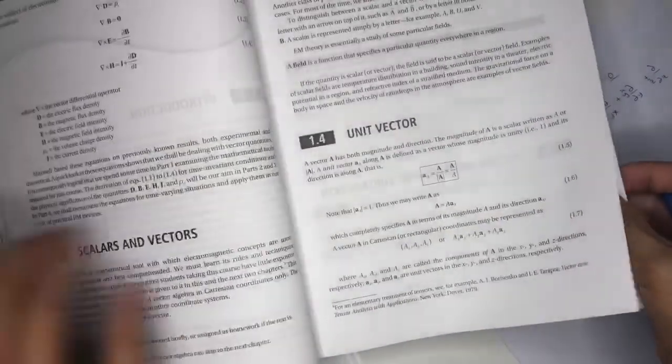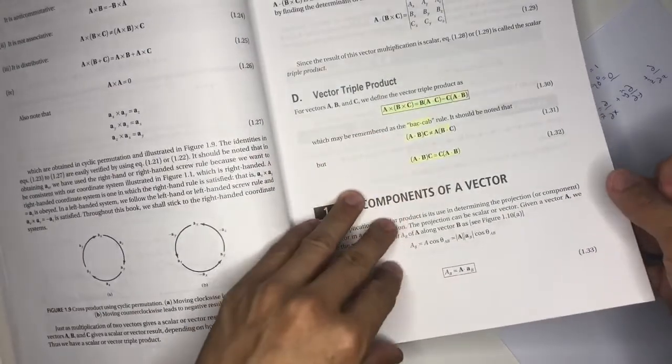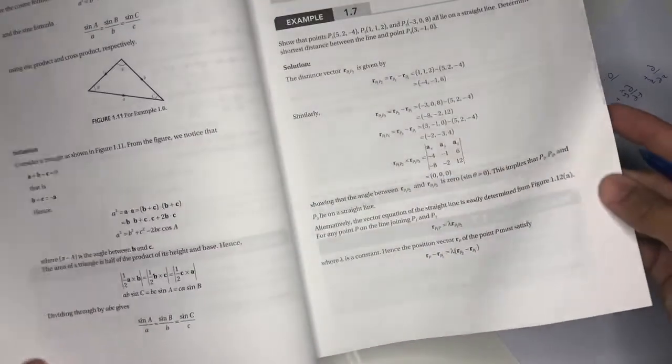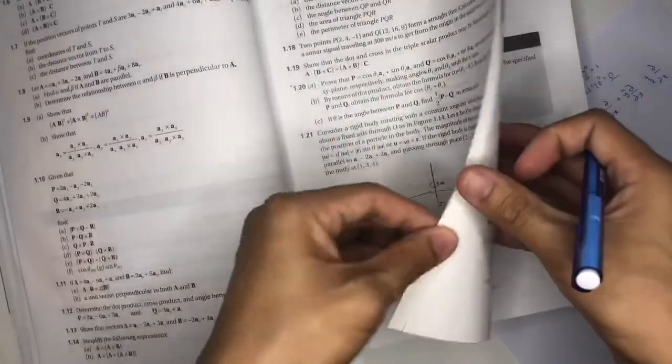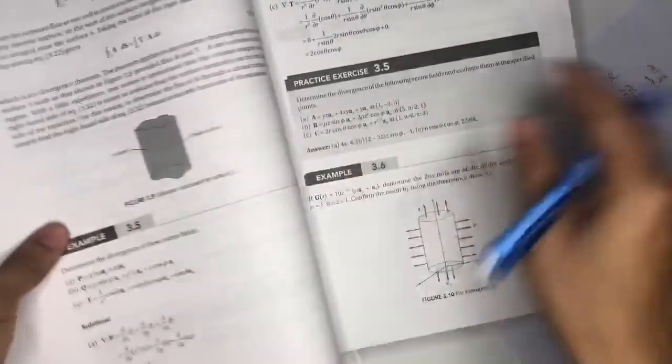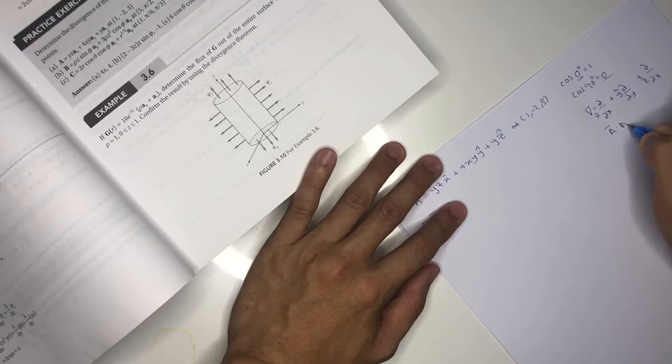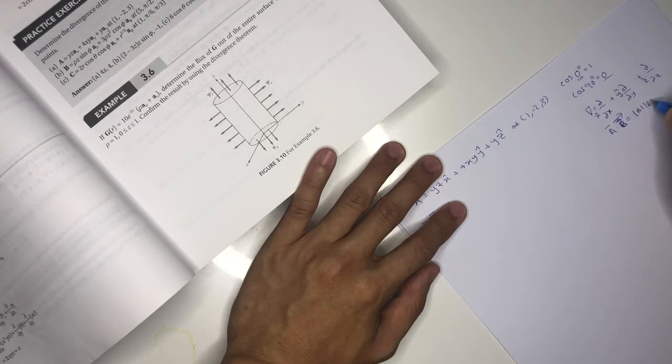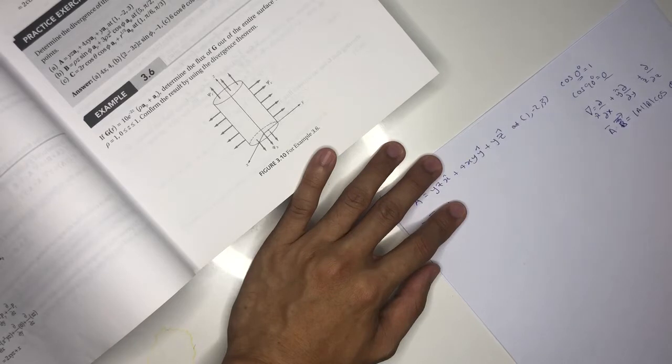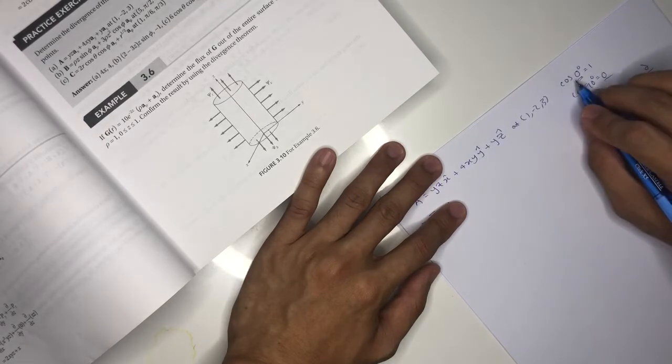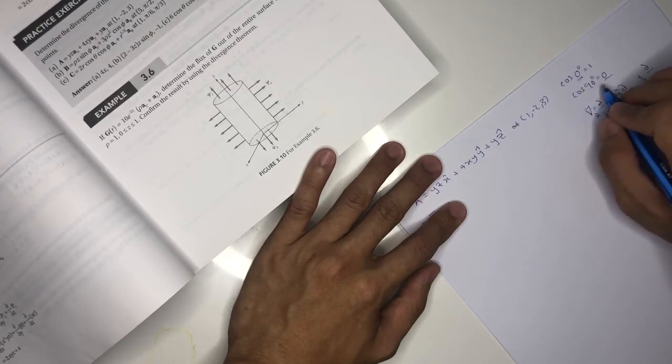Let me show you the page about the dot product. Vector A dot vector B is actually A times B times cos theta, where theta is the smallest angle. From the dot product definition, it's cosine, so anything parallel will be 1, and if orthogonal, it's 0.